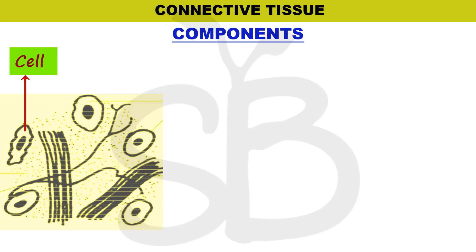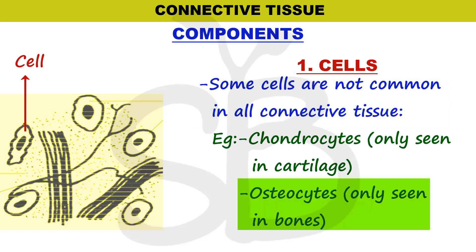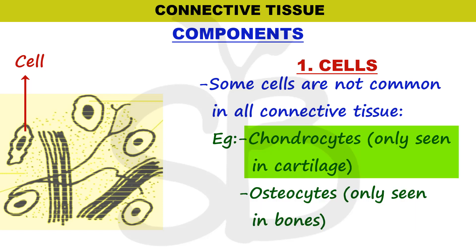One important item is cells. These cells are very important. We will study the classifications of connective tissue. In many connective tissues, there are more than one type of cell. For example, there are bones in connective tissue. There are special cells in the bones — there are osteocytes. There are also chondrocytes.